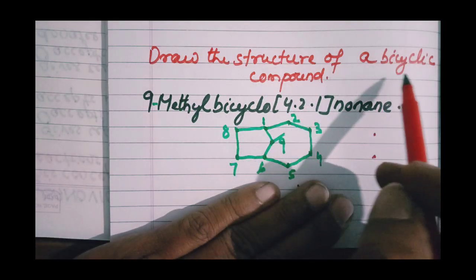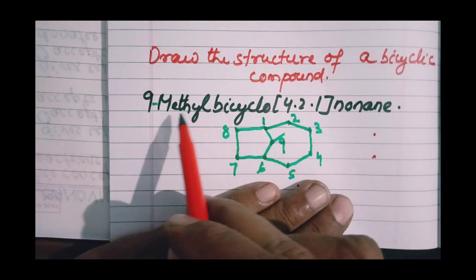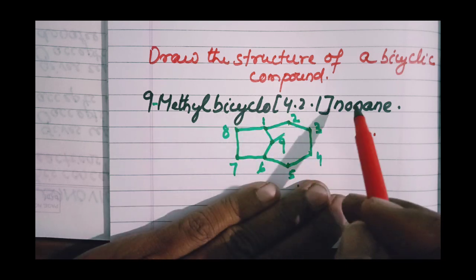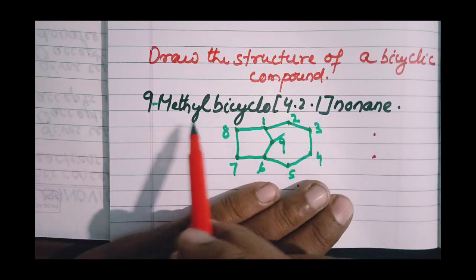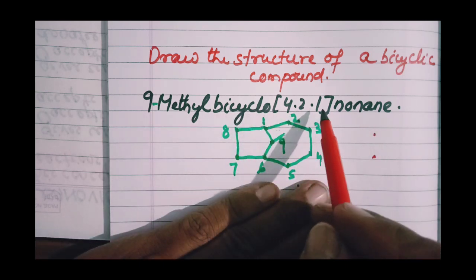This video will help you draw the structure of a bicyclic compound if its IUPAC name is given. Let's take an example: 9-methyl-bicyclo[4.2.1]nonane.